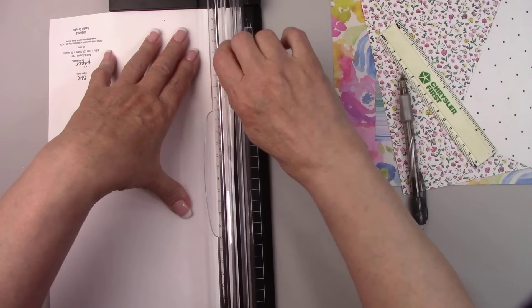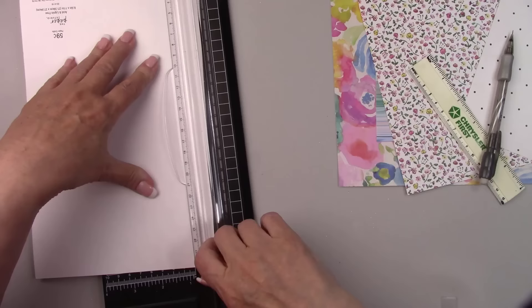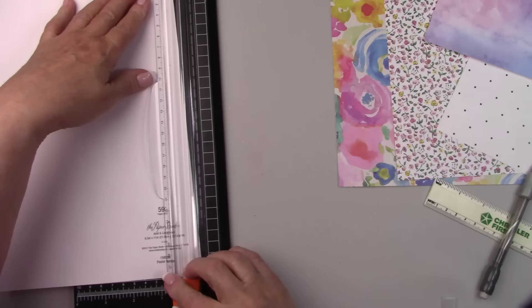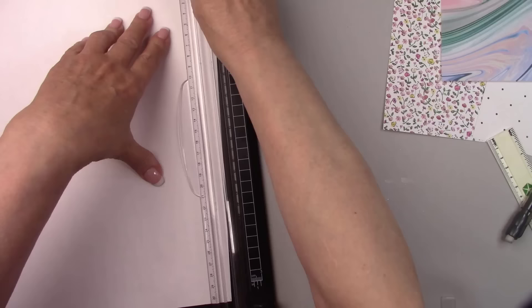When picking out your paper don't be concerned with the print as much as the colors. When rolling the triangle beads you won't be able to see the pattern at all, just the colors and they'll all blend together. I chose some papers with some pretty lavender and pink colors.